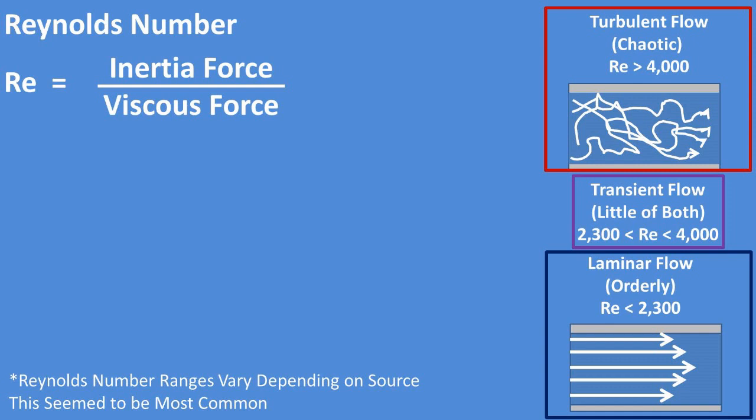So rule of thumb is that if the Reynolds number is smaller the flow will be more turbulent.